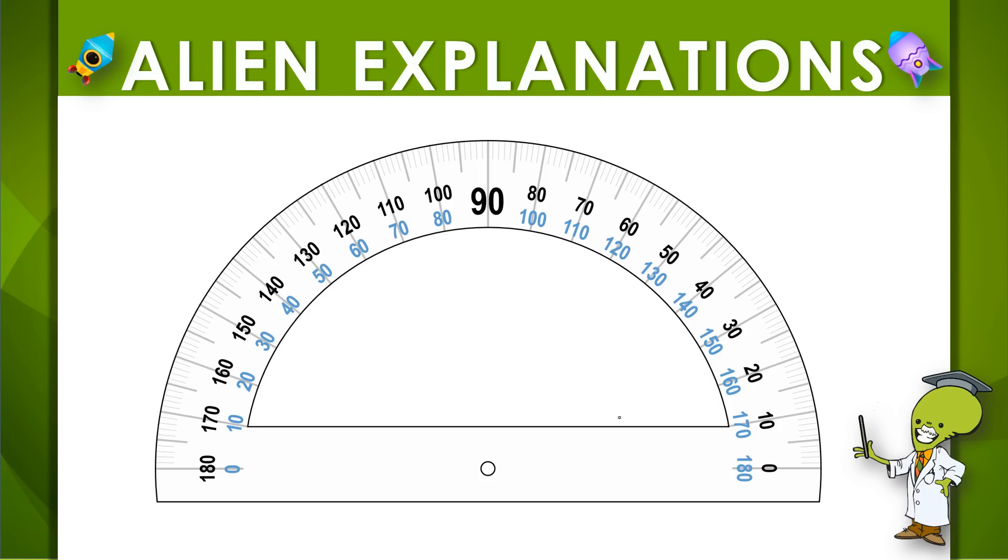Well, half of a circle measures 180 and it goes both ways. See, we have a set of numbers in blue that go from 0 to 180 this way, and the numbers in black go from 0 to 180 that way.